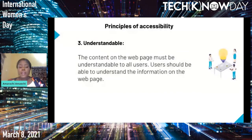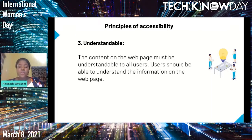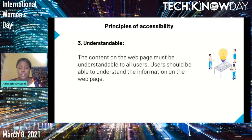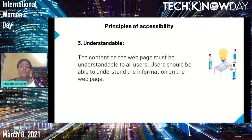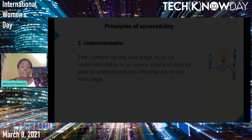The third principle is understandable. The content on the web page or application must be understandable to all users. Even if a user can perceive and operate a website, that doesn't mean they can understand it. An understandable website uses clear and concise language, limits confusion and ambiguity, is comprehensible, and has functionality that is easy to understand.